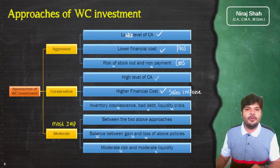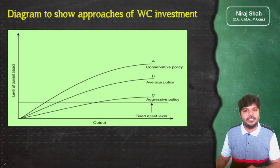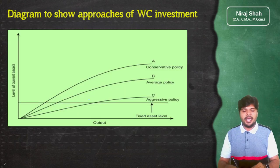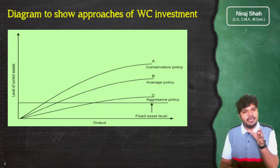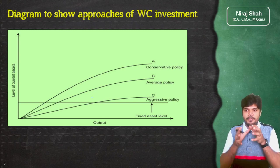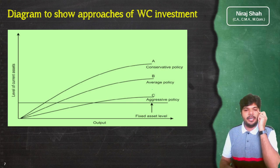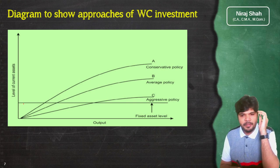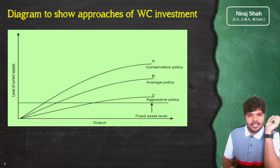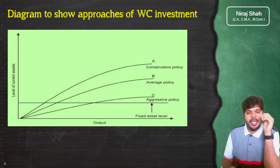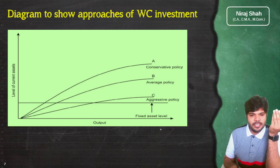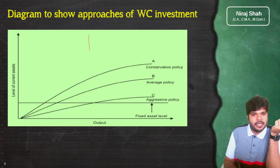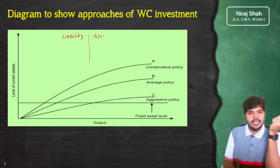इस working capital policy को एक diagram के through समझते हैं — यह diagram ICAI study material में जो बनाया था वैसा ही मैंने बनाया है जिससे आप exam oriented preparation कर पाएं। Balance sheet के अंदर दो sides होती हैं — liability side और asset side। Asset side पर दो चीजें होती हैं — एक fixed assets और दूसरा working capital यानि current assets minus current liabilities।